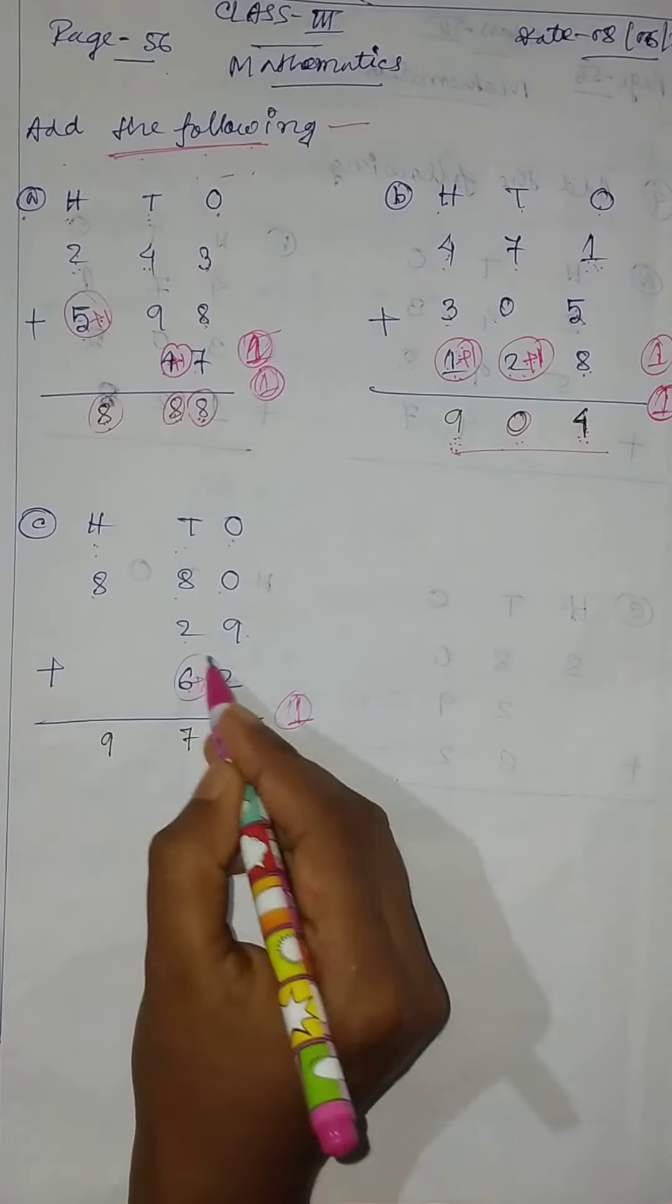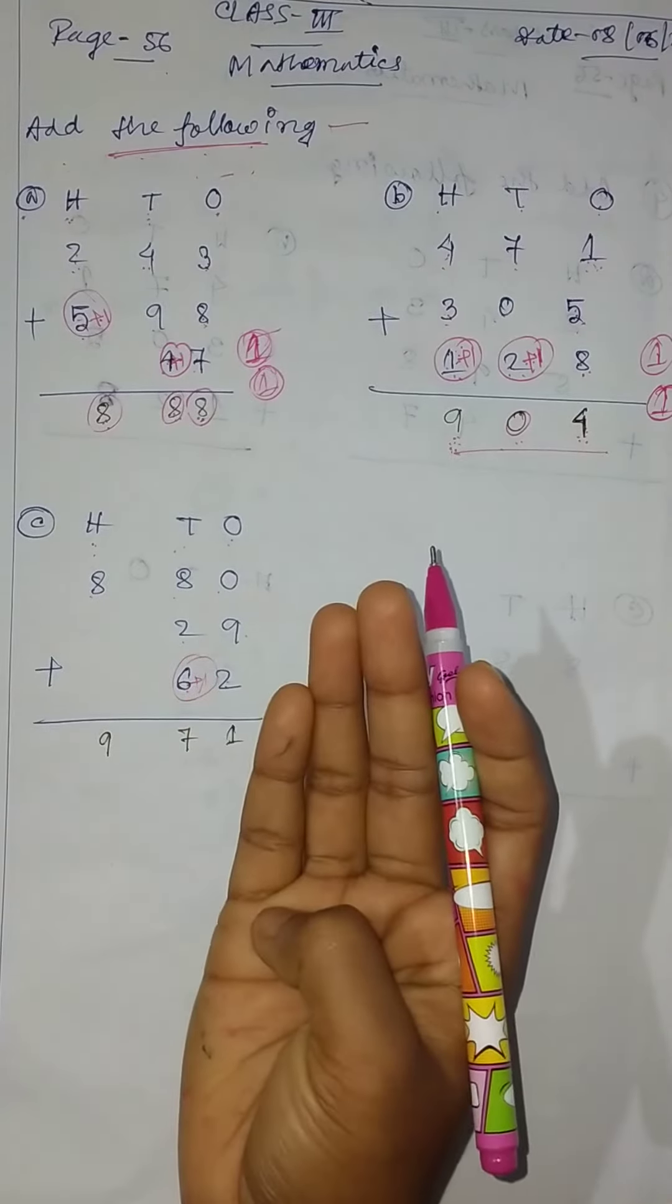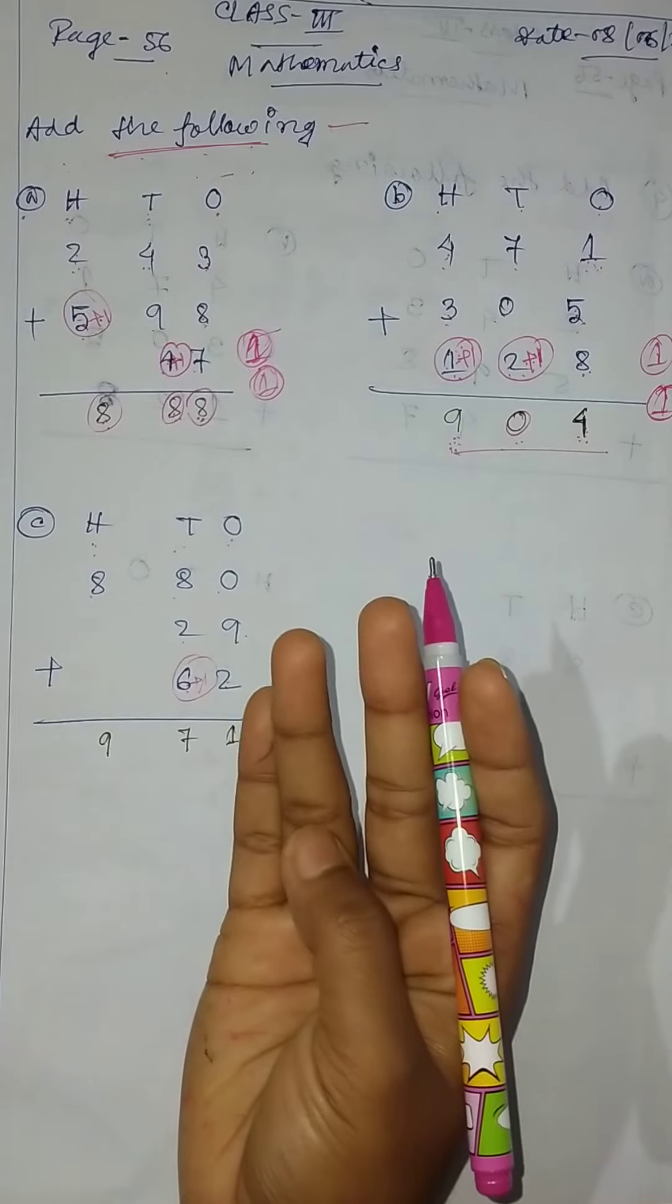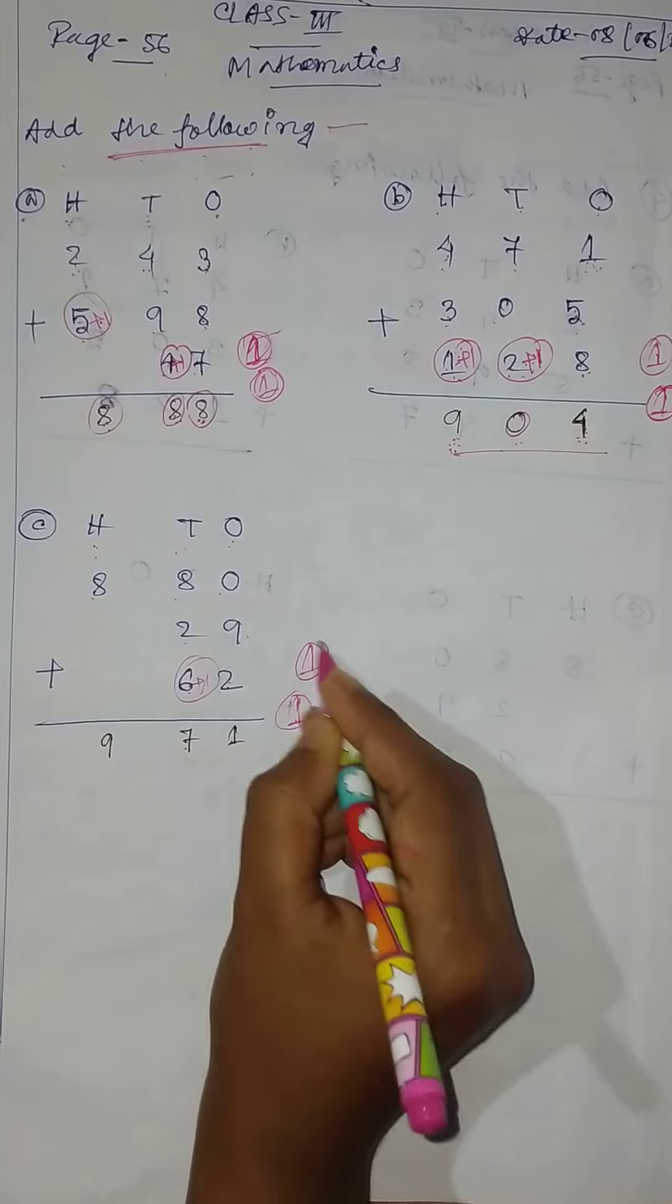6 plus 1 equal to 7, 7 plus 2 equal to 9. 9 plus 8: 9, 10, 11, 12, 13, 14, 17. 17, write 7 and 1 carry.